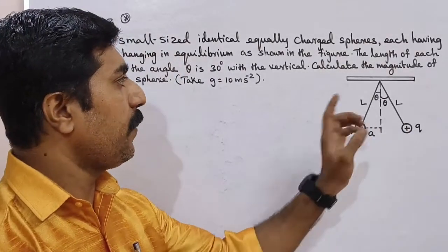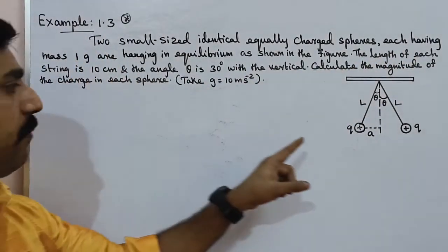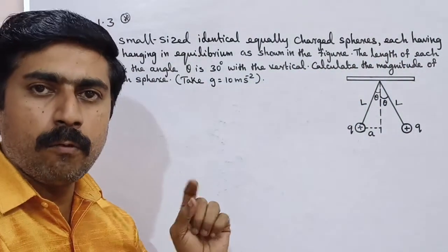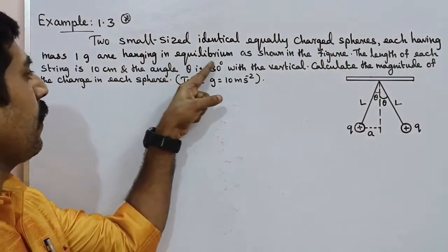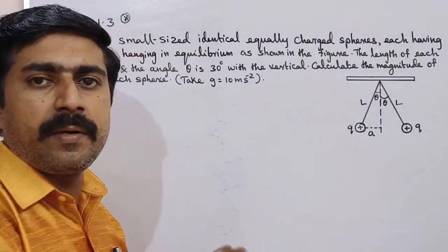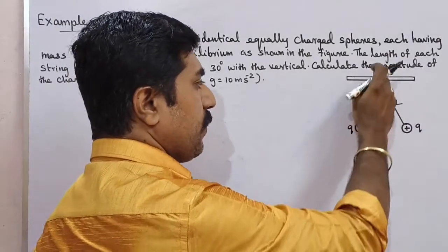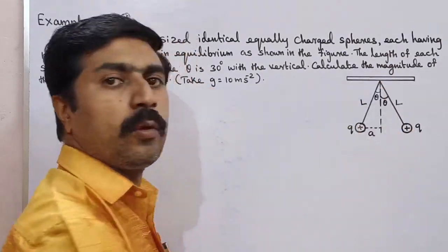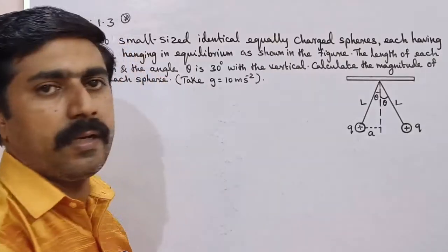What do we have to do? Each having mass 1 gram, so one mass is 1 gram. And hanging in equilibrium — equilibrium means in a steady line, so the summary line is in equilibrium position. Hanging is high.